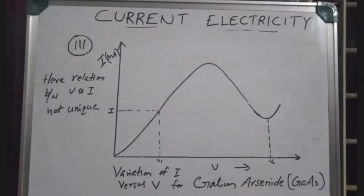The relation between V and I is not unique. Gallium Arsenide material has a V-I graph where for two different potentials V1 and V2, there is a constant value of I. The relationship is not unique. These are the three points of failure of Ohm's Law, which is why Ohm's Law is not a universal law — it is a basic law, not a universal law.